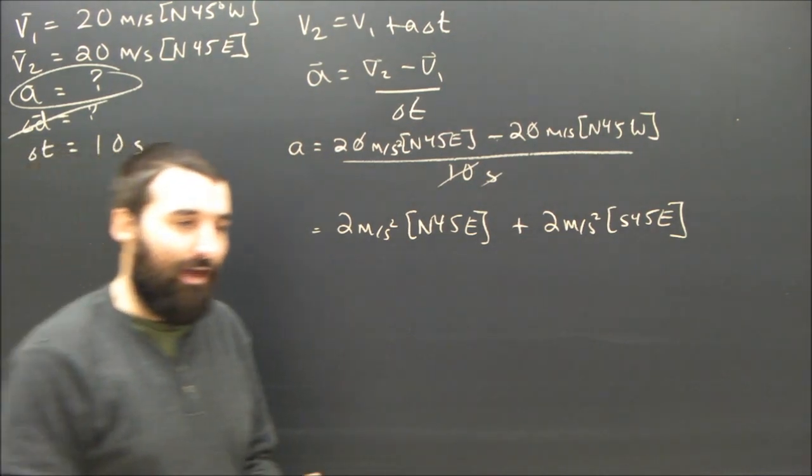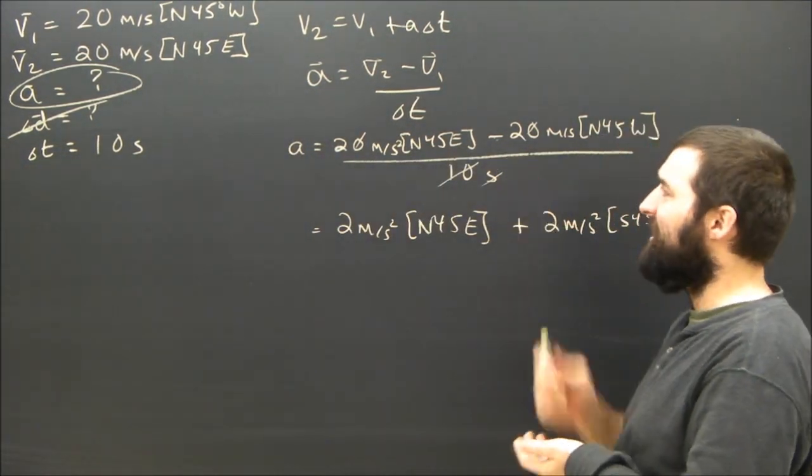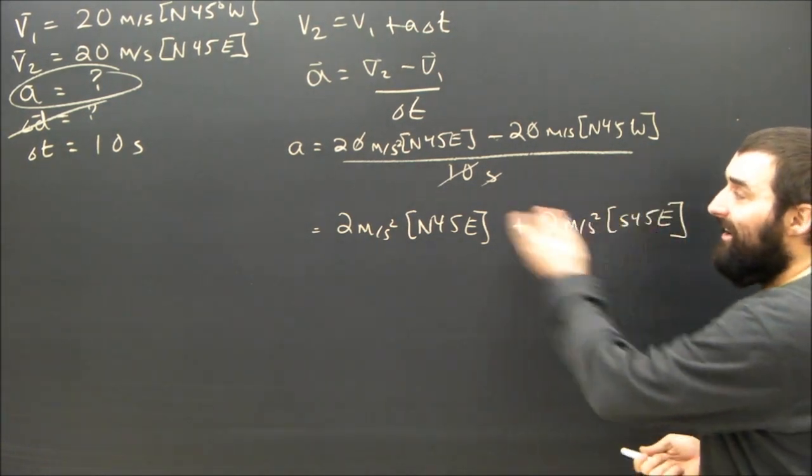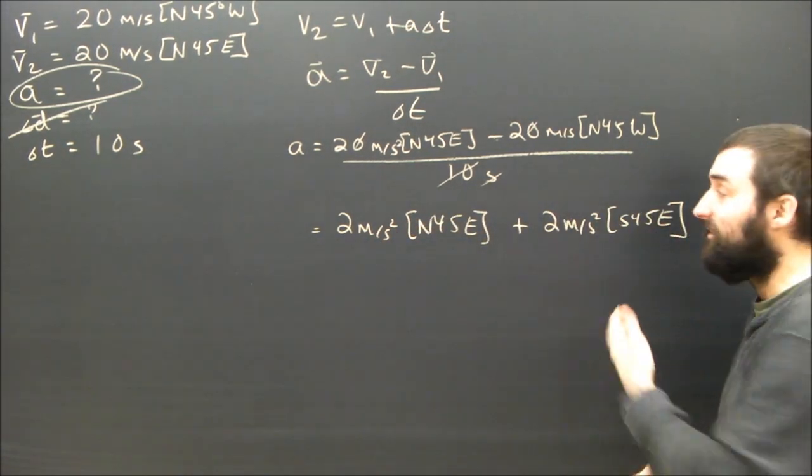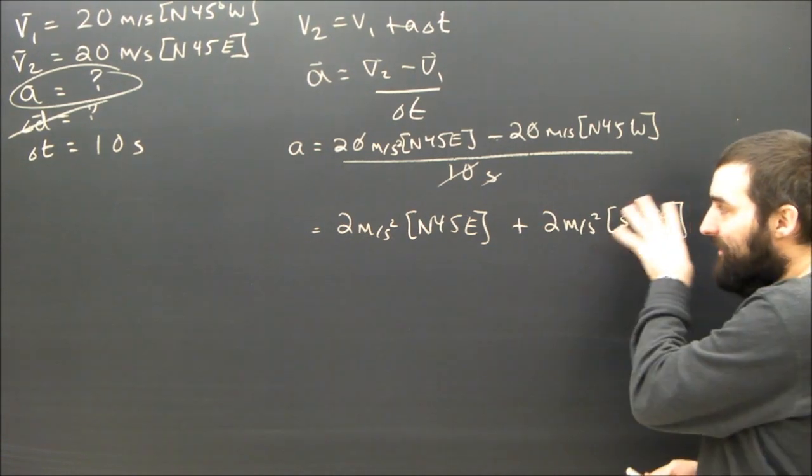But I've divided by 10 so 2 meters per second squared south 45 east. Again, I don't subtract vectors. I just add their opposites. I change negatives so that they're pluses. And now I have a vector equation which is very easy to add. Northeast plus southeast.